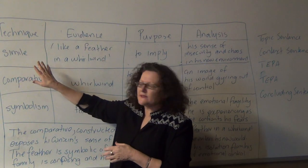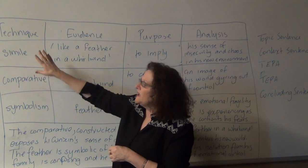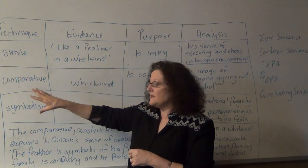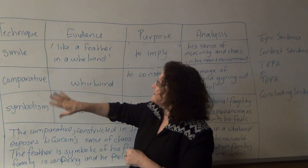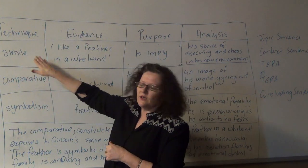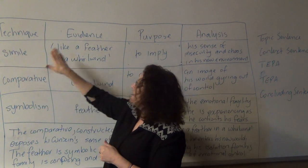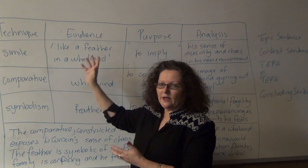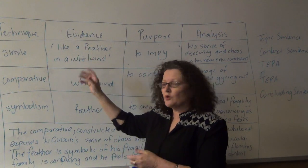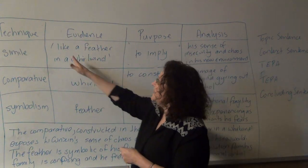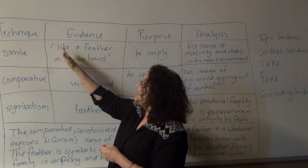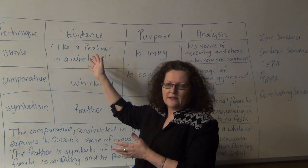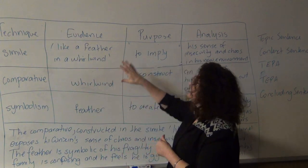Let's have a look at this little simile here. I've actually taken this from Mao's Last Dancer by Li Cunxin. It is a simile — it uses 'like' or 'as' — so we know it will create a comparative or an image. The simile is: 'like a feather in a whirlwind.' Lovely and simple and straightforward.